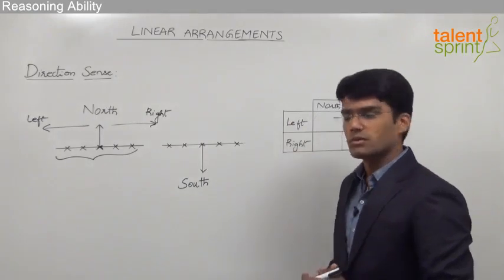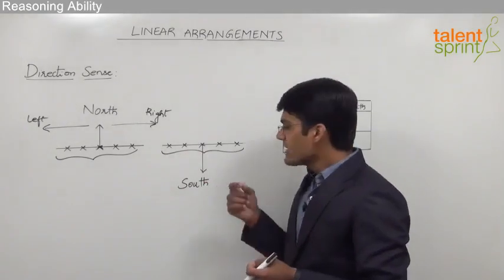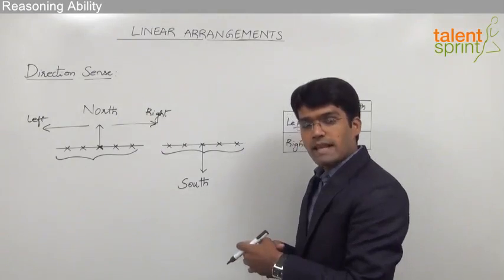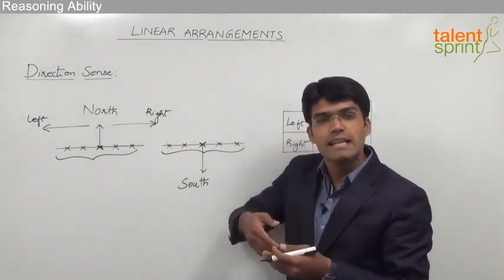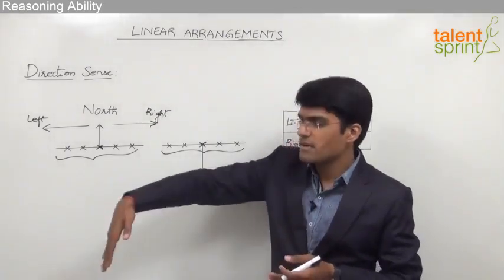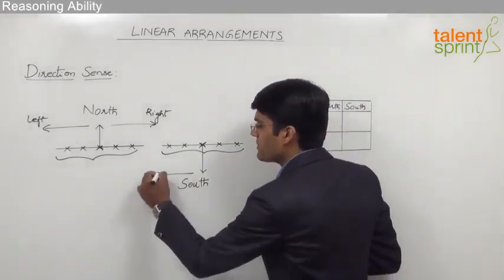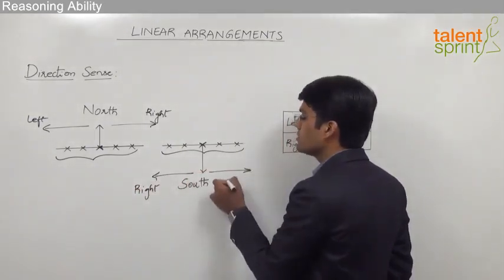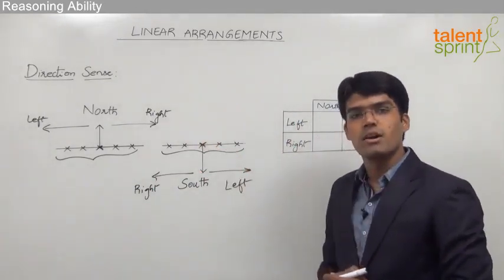But what happens when a person is facing south? Let us assume this is again a group of five persons who are facing south. When a person is facing south, it is clear that he is in the downward direction on paper. In such a case, if we take the position of one of these persons, we can understand that the left of this person will be towards our right on the paper and the right of this person will be towards our left on the paper.